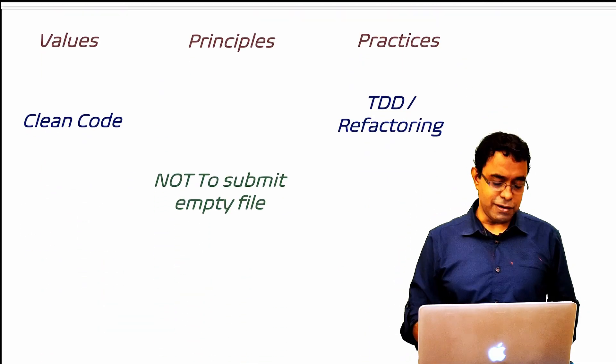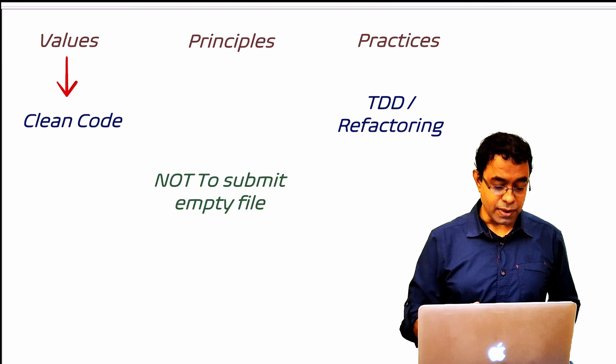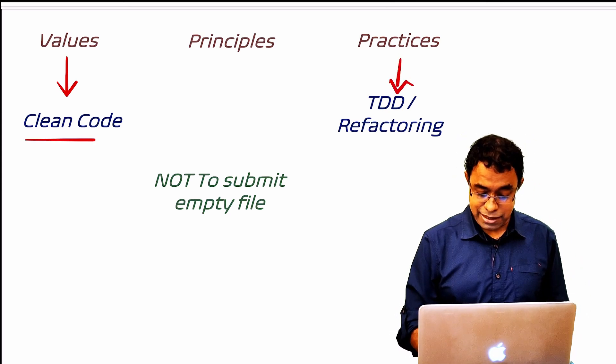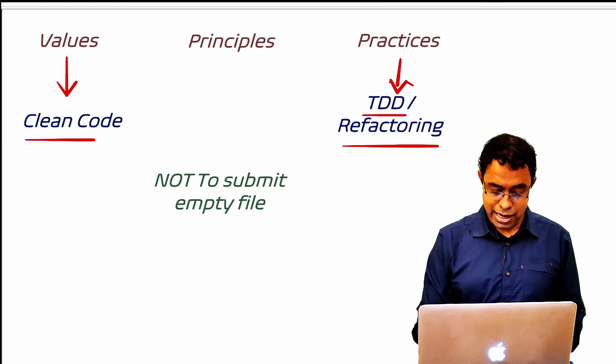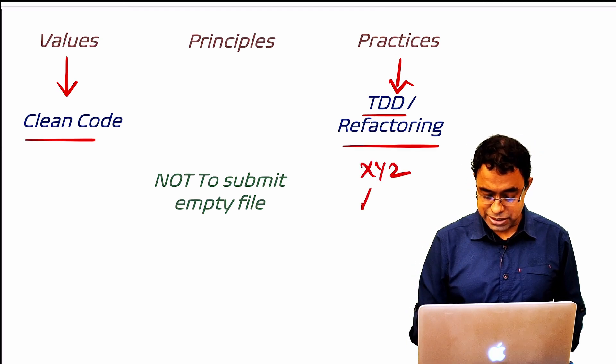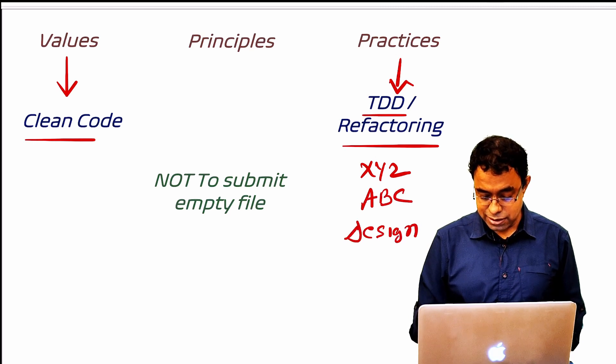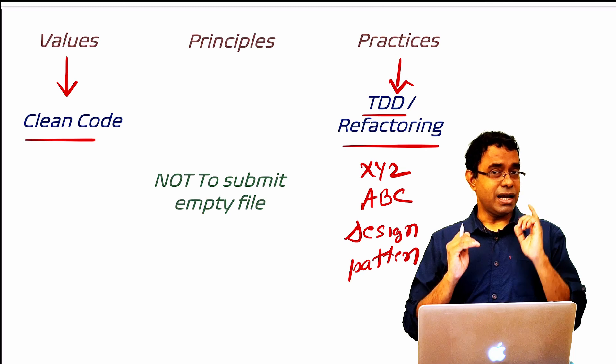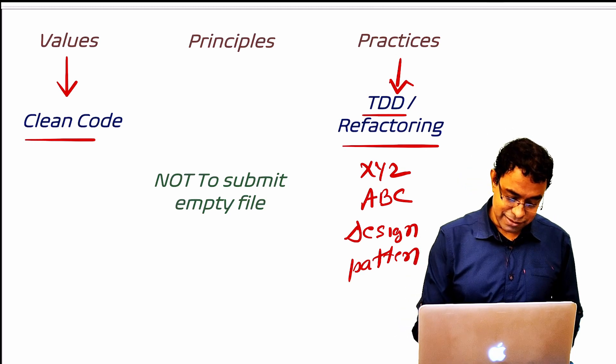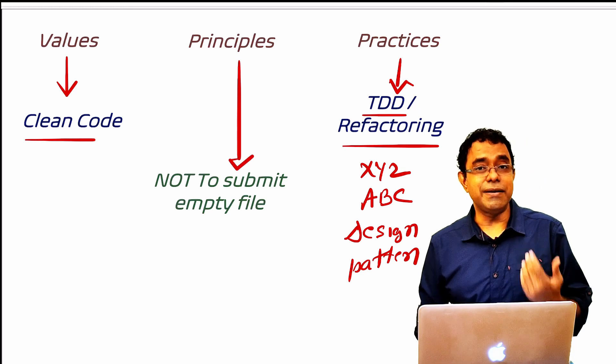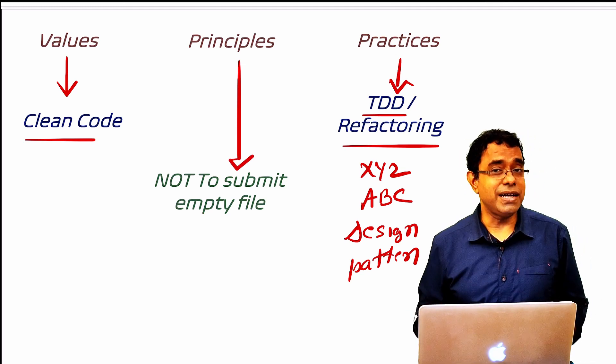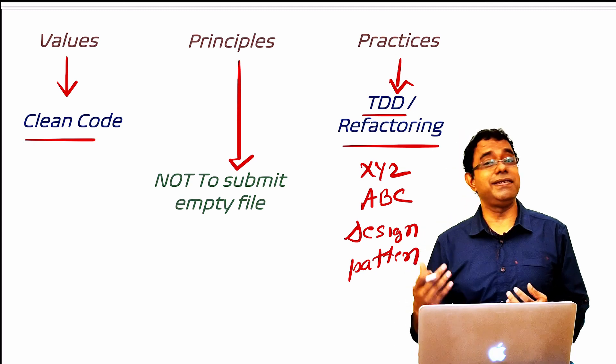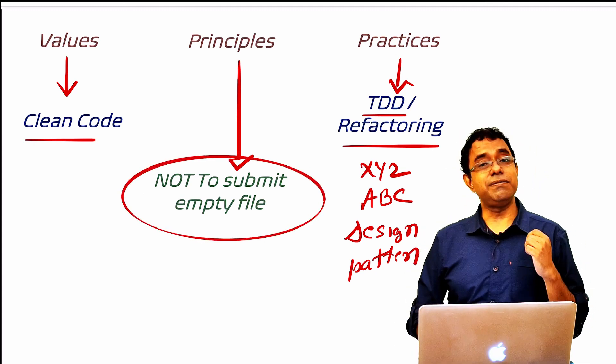In terms of software development, our value is clean code. Having clean code is a value. But there are multiple ways to achieve this value. Maybe I can use TDD, I can use refactoring, there might be XYZ or ABC method, or something called design pattern which will help me in making sure that my code is clean. Understand? Now principle is very simple: you will make sure that you are not submitting empty file. If you submit empty file your code is clean because when there is no code in the file, code is clean and nobody can challenge this particular clean code where you are submitting empty file.